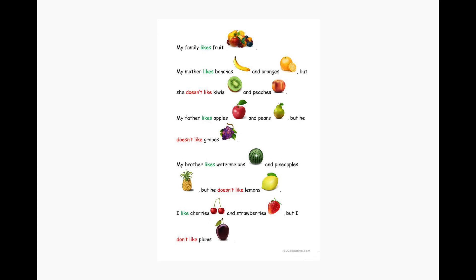Now the last two are going to be a tiny bit more difficult. True or false: my father likes apples and grapes. It's false — my father likes apples but he doesn't like grapes. Now the hardest one: true or false: my brother likes watermelons and I like plums. The answer is false — my brother likes watermelons, but I don't like plums.